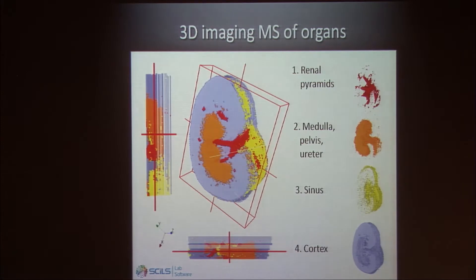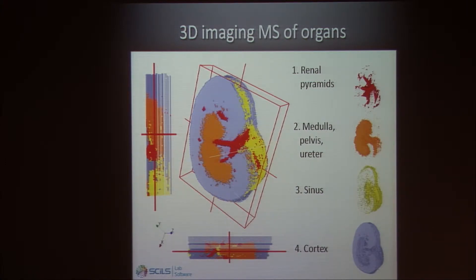We can do the same for organs. We can take an organ, section it, analyze each section with imaging mass spectrometry, and reconstruct a 3D model of the whole tissue. This is what I call a molecular snapshot — you have an organ, and at that moment in time you know all the molecules which were there and where they were.